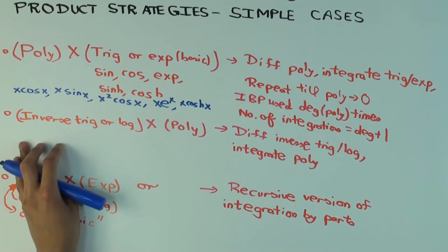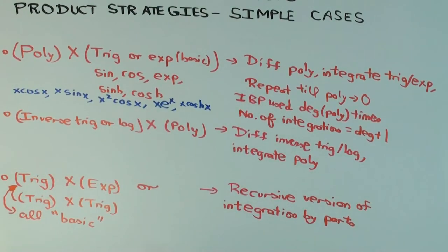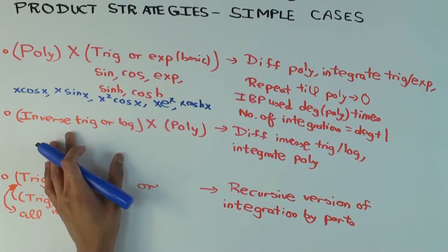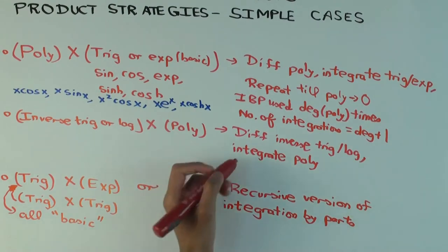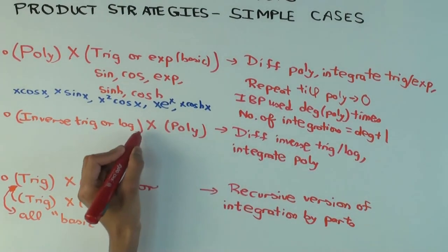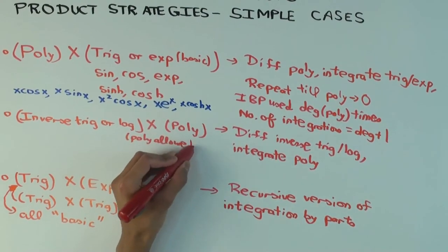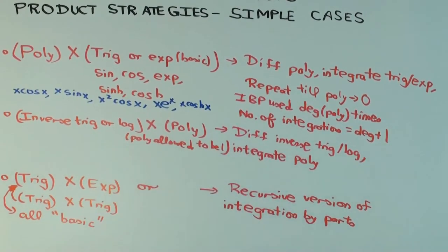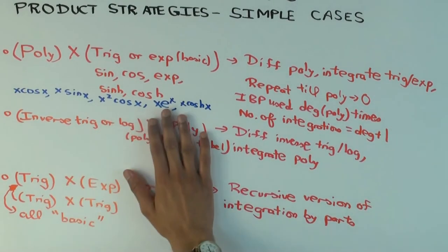So what about this type, inverse trig or log times polynomial? So in this, I want to say another thing, which I forgot to say originally, is that for this type, you can actually have a situation where the polynomial is allowed to be 1. That makes sense, 1 is a polynomial. But it means in particular, if you're just trying to integrate an inverse trig or log, and you don't see any other factor in the product, you can still imagine that the other piece of the product is the polynomial 1.